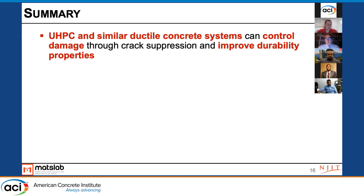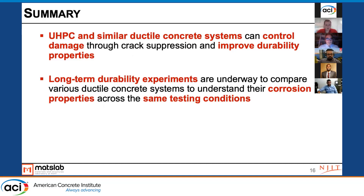In summary, three takeaways. First, UHPC and similar ductile concretes control damage through crack suppression and improve durability, which offers a main advantage beyond even traditional structural approaches. Second, we're using long-term durability experiments to understand corrosion properties across the same testing conditions — many of these systems have been looked at, but not necessarily under the same conditions, so we're trying to tease out some variables in terms of how different ductile concretes are effective.